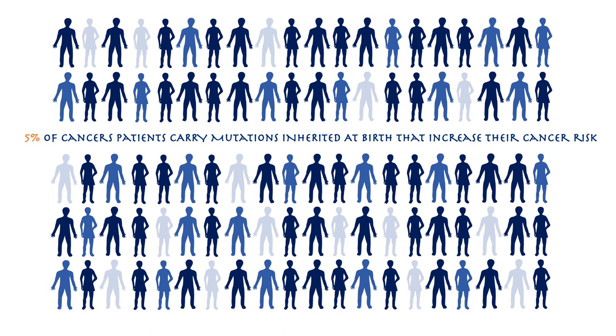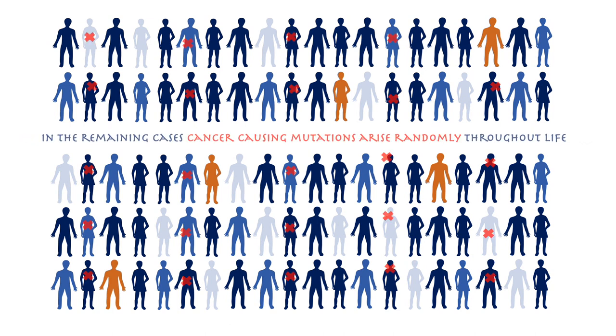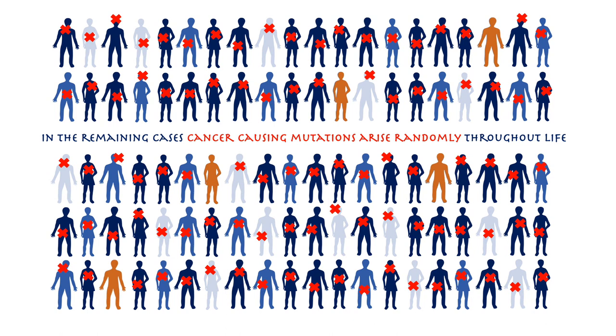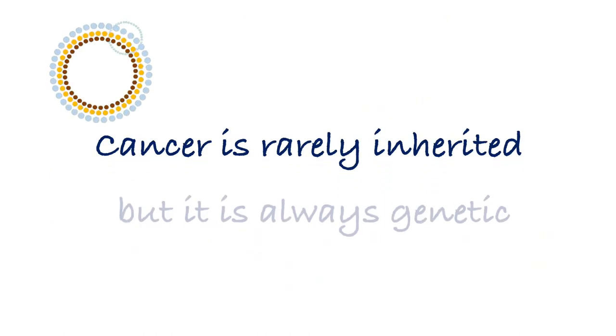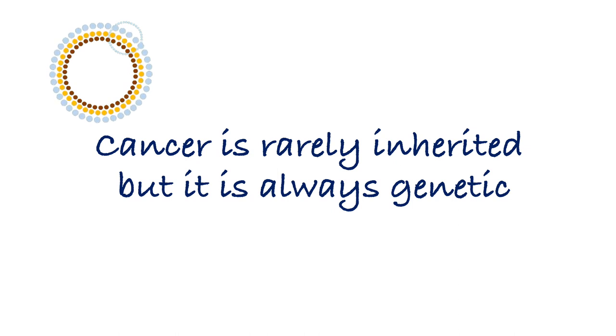It's important to identify these mutations, as they can give doctors a better understanding of the prognosis and sometimes how best to treat the condition. Approximately 5% of people diagnosed with cancer were born with a mutation that increased their risk of developing that cancer. In all remaining cases the cancer developed because mutations randomly occurred in the process of copying and dividing cells. Therefore, cancer is rarely inherited, but it is always genetic.